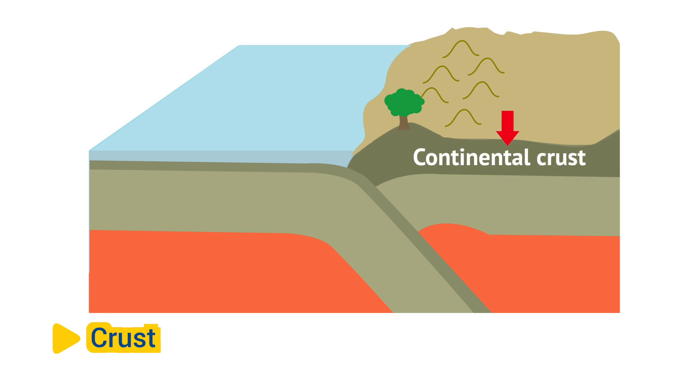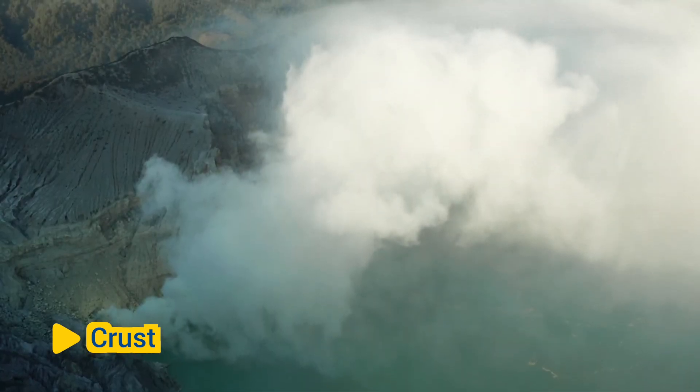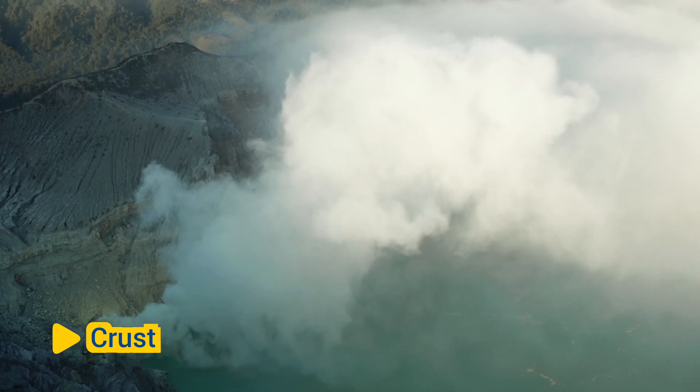Continental crust, which forms the continents and is thicker and less dense, and oceanic crust, which underlies the ocean basins and is thinner and denser. The crust is where most geological processes, such as earthquakes and volcanic activity, occur.